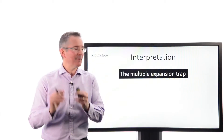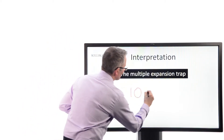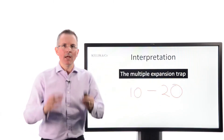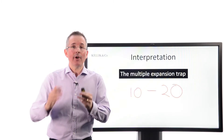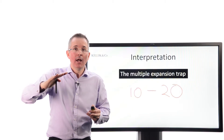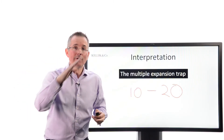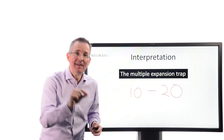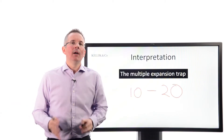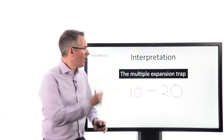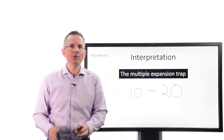Finally: interpretation. Be a little careful of the multiple expansion trap. Suppose a PE ratio goes from 10 to 20 — you have to ask why. Is it because analysts are seeing actual real earnings coming through and marking up those real earnings? Or is it expectations — the market getting a little bit ahead of itself, marking up the share price because it expects future earnings growth, with no real evidence of a proper earnings increase? That's called multiple expansion. You can also get multiple contraction — the reverse. It's important to ask: what's moving the PE ratio — expectation or actual results?